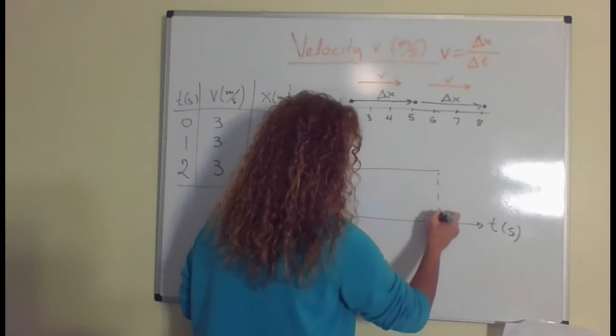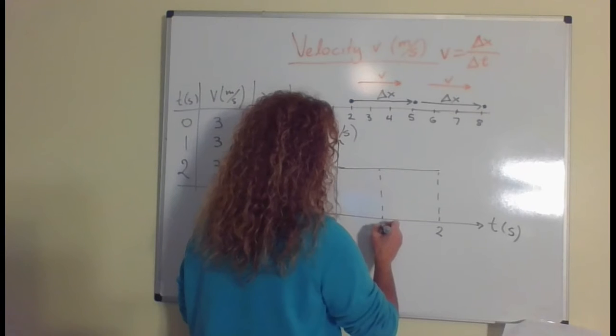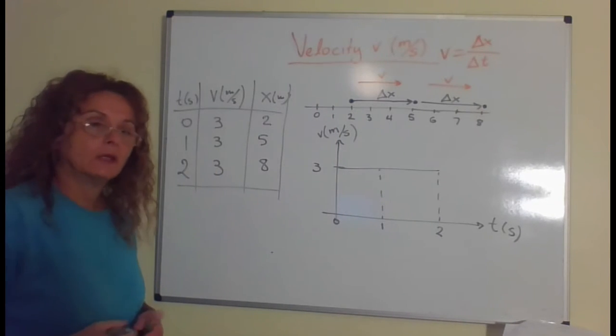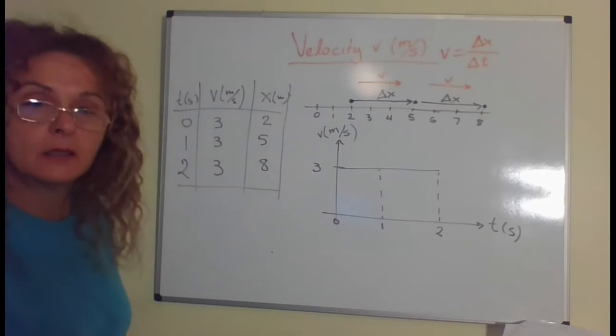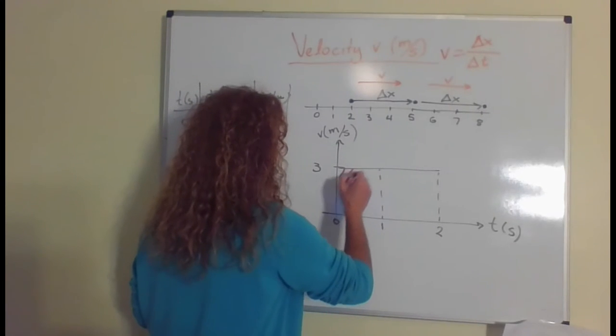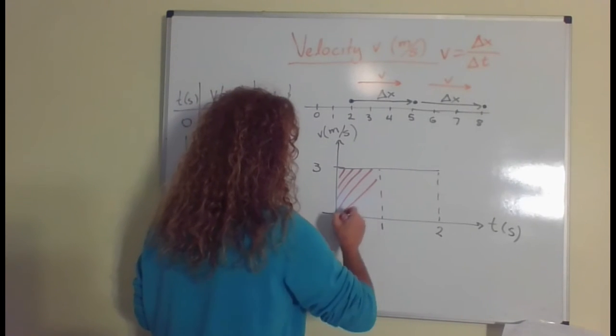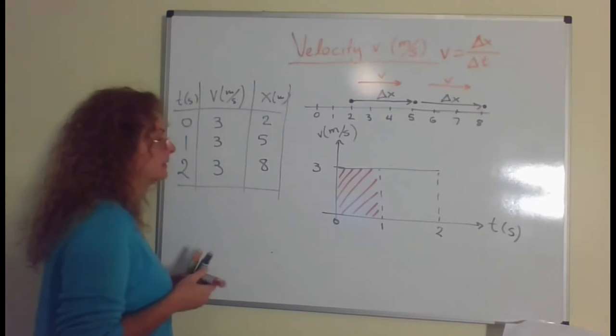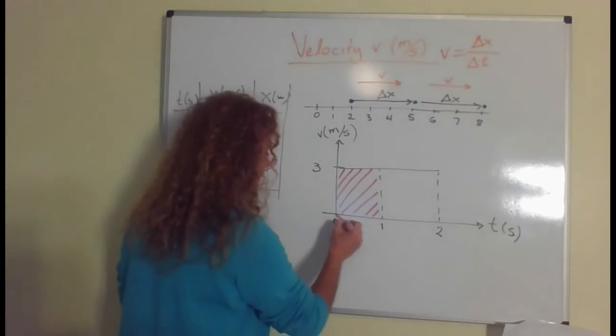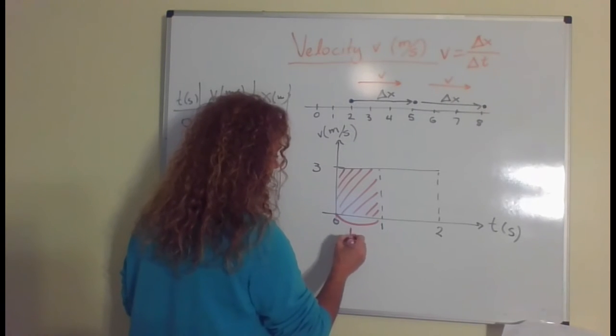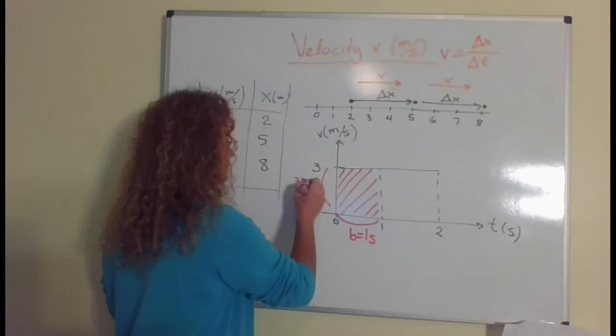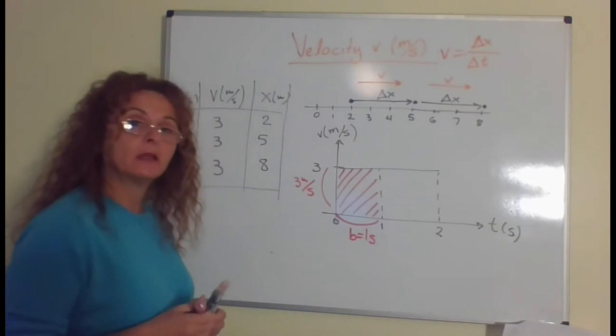What we can do now is we can see how much the area under the velocity-time graph is for every second. What is this area? This area is a rectangle and we can find it base times height. This is the base, it's one second. This is the height, it's 3 meters per second. We never forget the units.